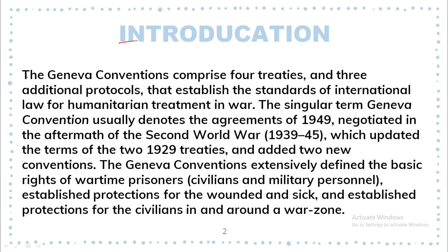Introduction. The Geneva Conventions comprise four treaties and three additional protocols that establish the standards of international law for humanitarian treatment in war. The singular term Geneva Convention usually denotes the agreement of 1949, negotiated in the aftermath of the Second World War, which was held between 1939 and 1945, and which updated the terms of two 1929 treaties and added two new conventions.